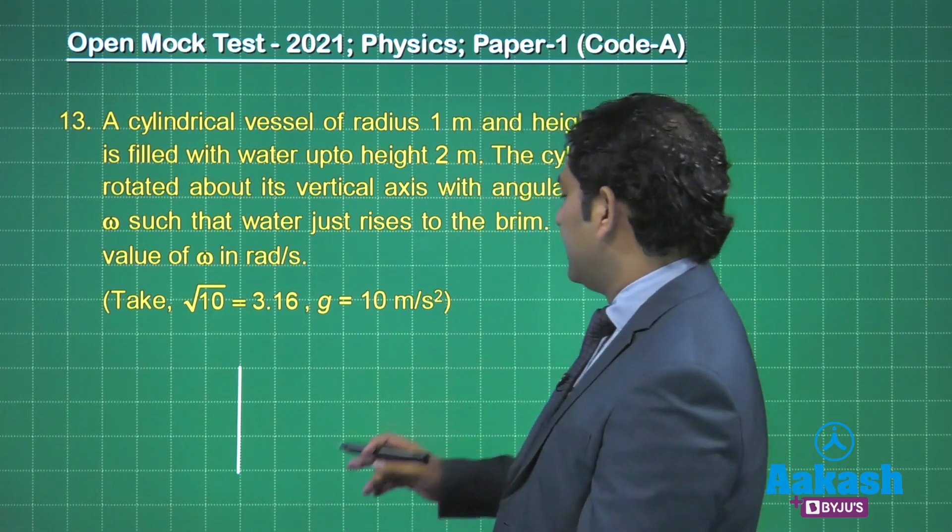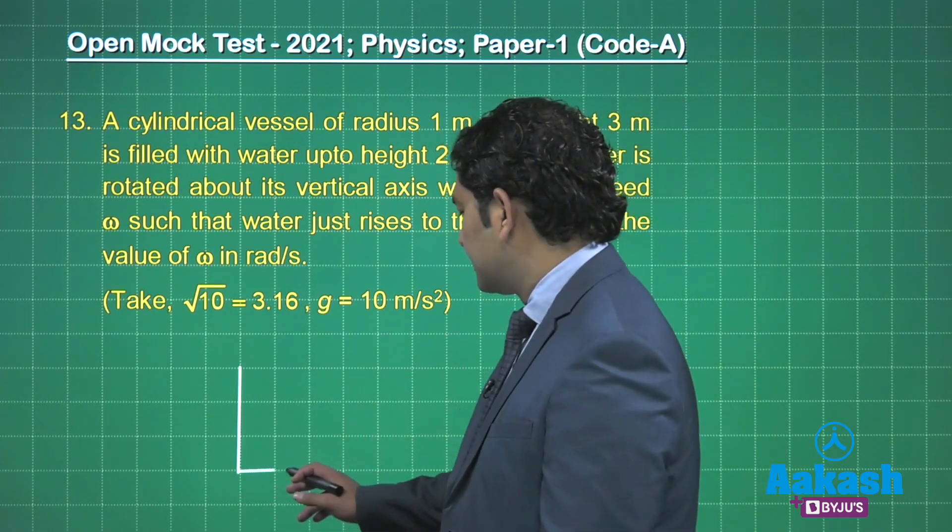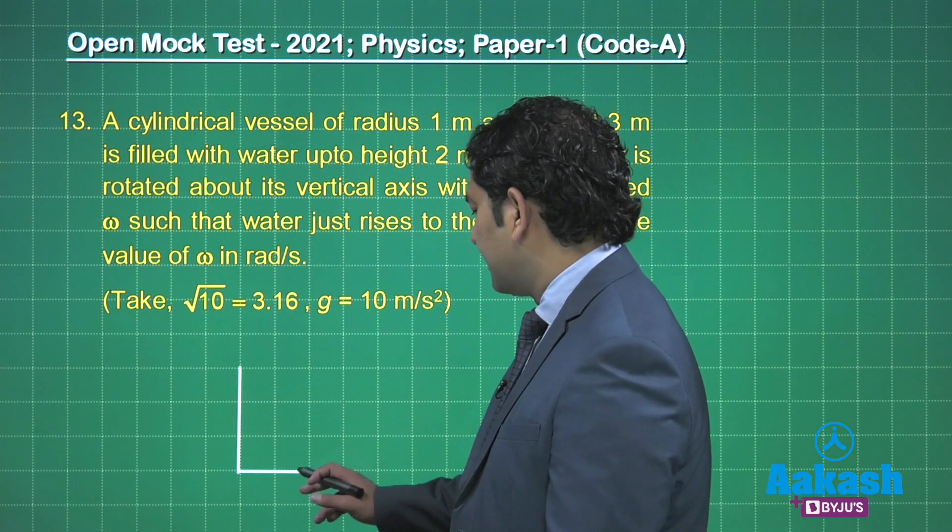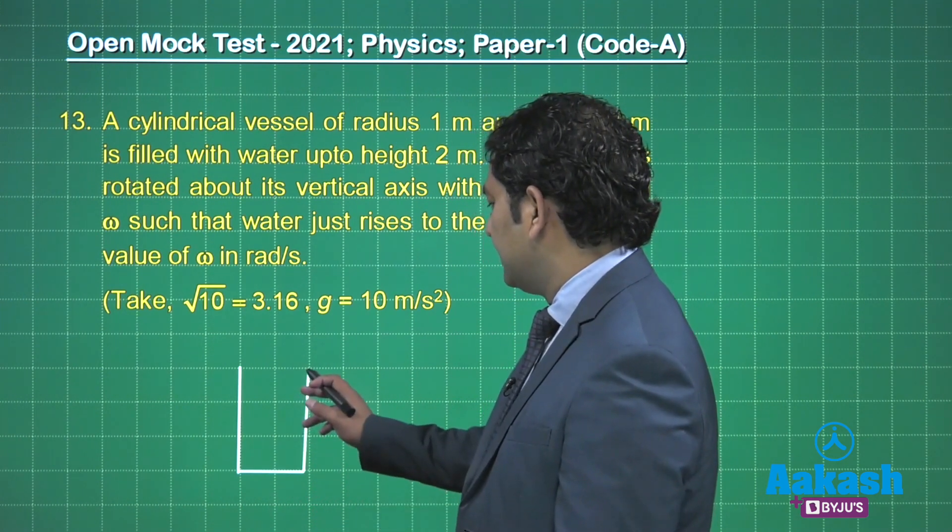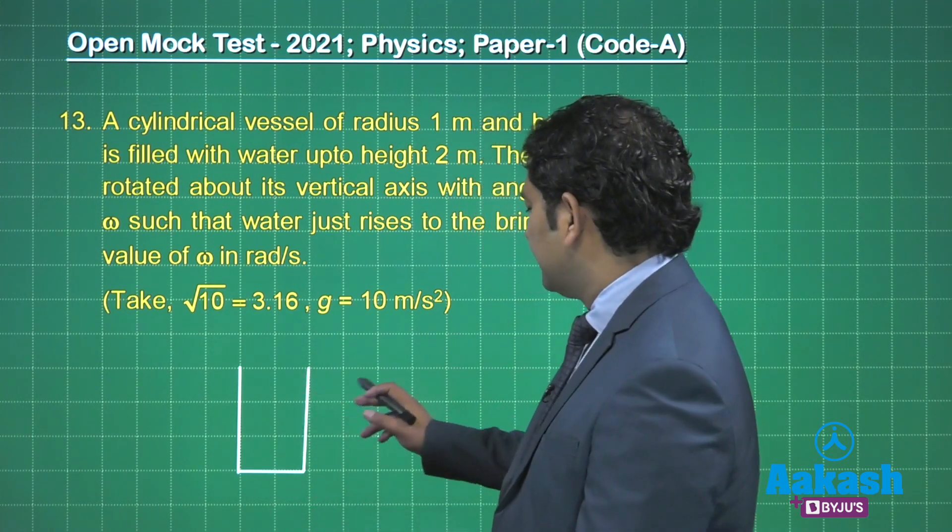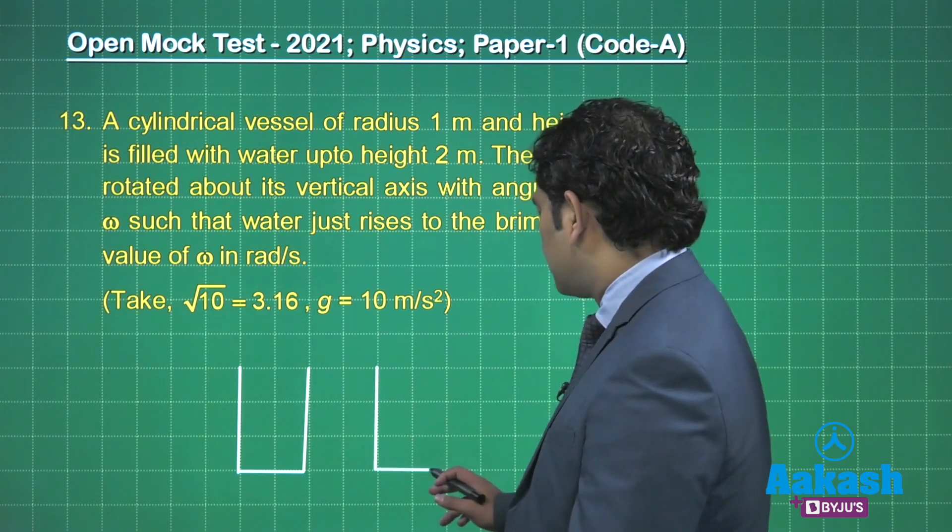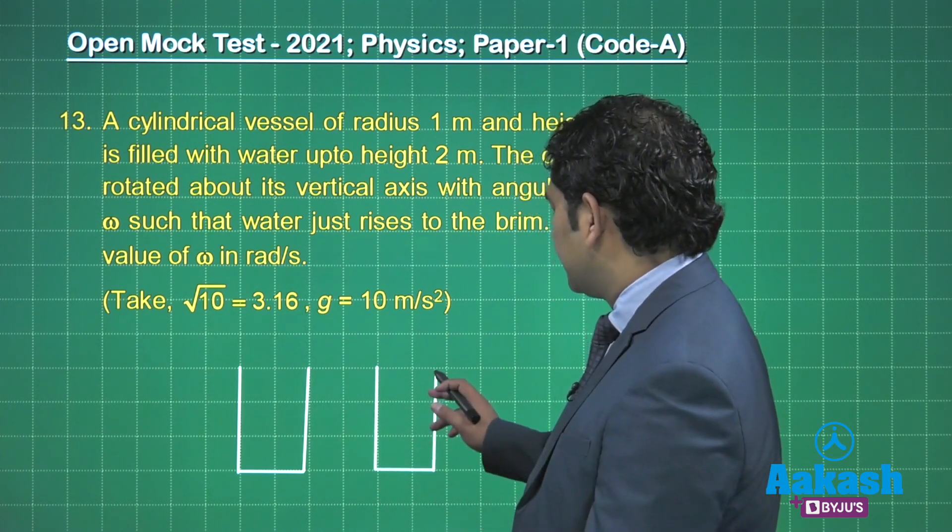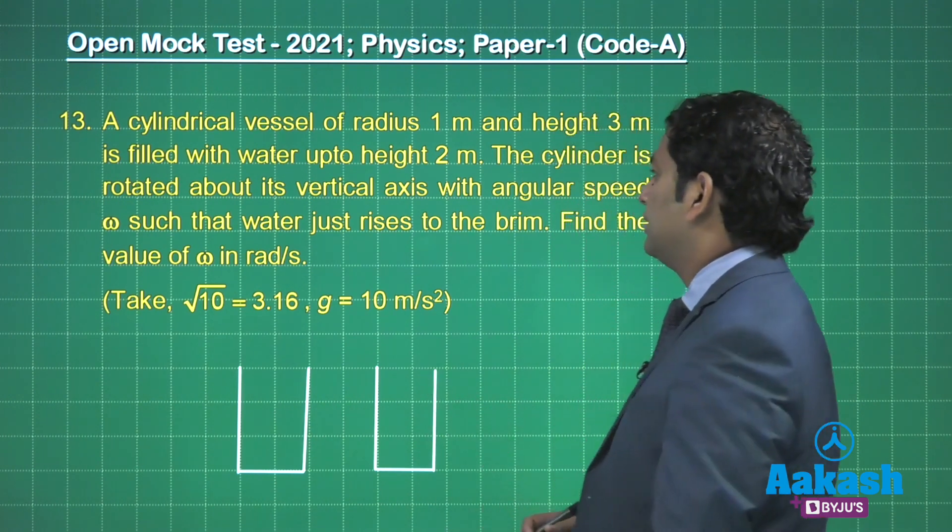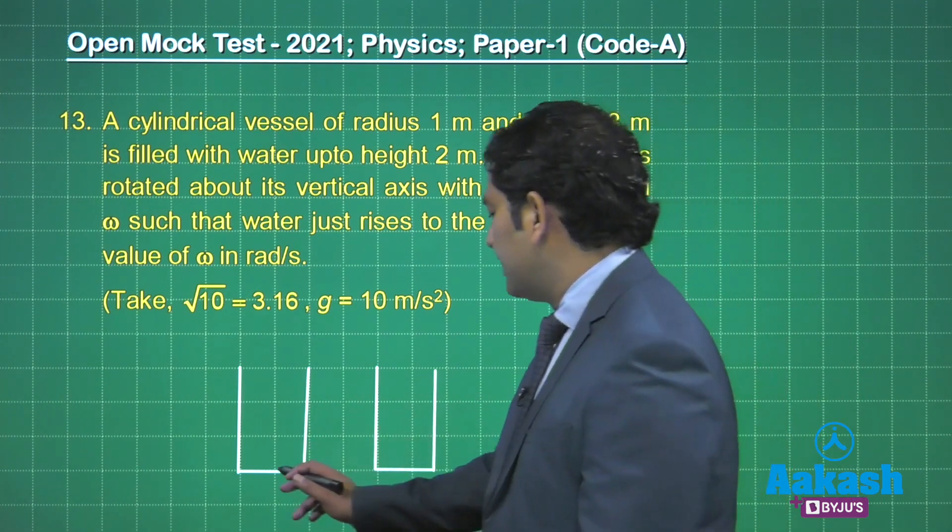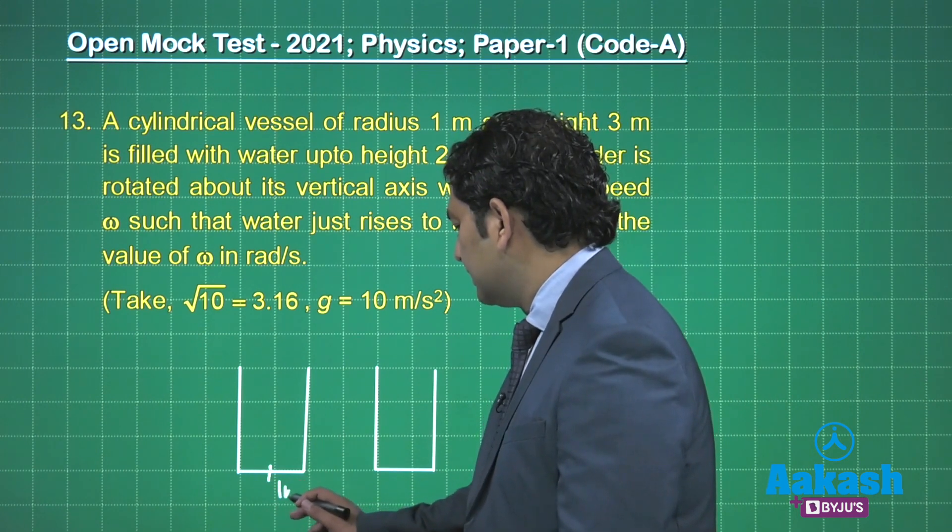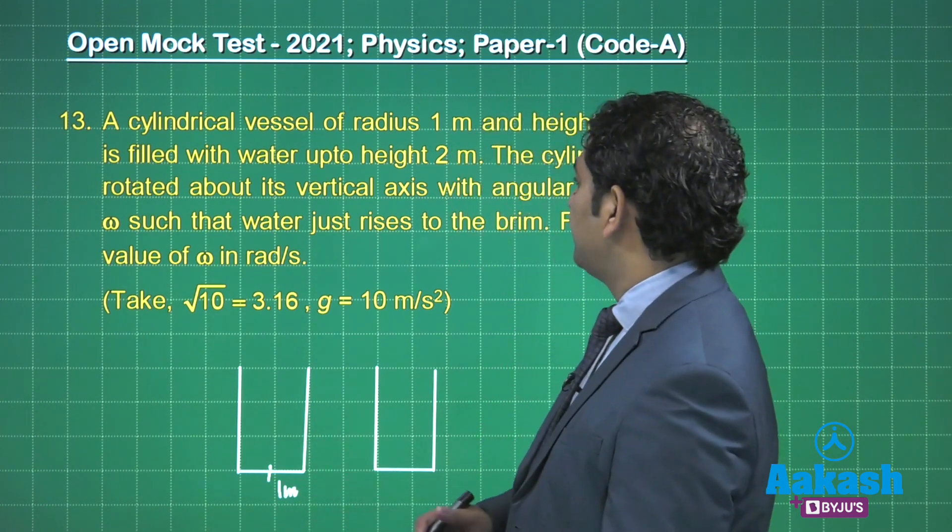It's of radius 1 meter, so just an indicative diagram - please don't scale it. This is that cylindrical volume. I would like to draw the next one as well so that you can have a comparative view.